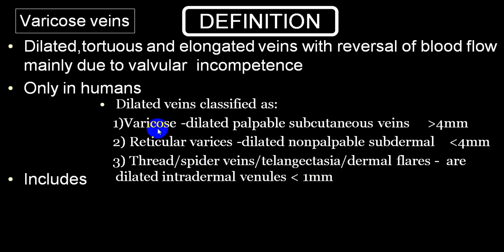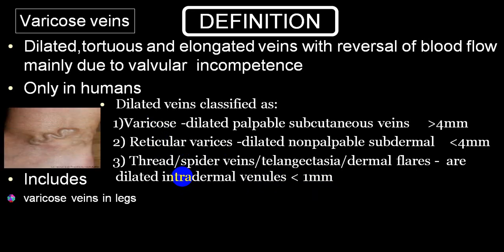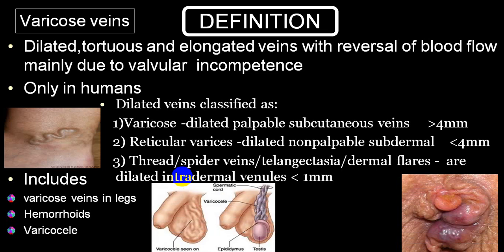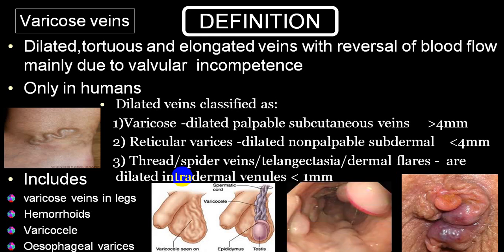So this is divided into three groups: varicose vein, reticular varices, and spider veins or telangiectasia. Varicose vein is most commonly seen in the legs, can also be seen in the form of hemorrhoids, varicocele in the scrotum, and in people with portal hypertension presenting with esophageal varices. These are all dilated varicose veins.